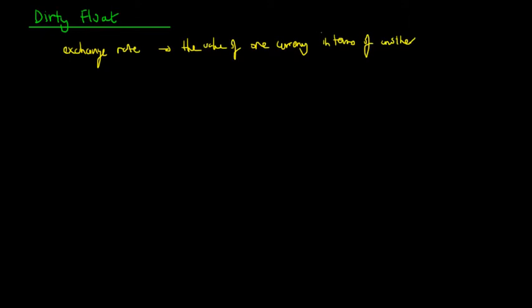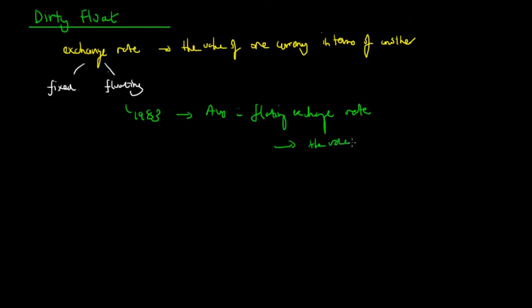There are two types of exchange rates: firstly the fixed exchange rate and secondly the floating exchange rate. Since 1983, following the financial systems deregulation, Australia has adopted what is known as a floating exchange rate. The floating exchange rate is where the value of the Australian dollar is determined by market forces of supply and demand.